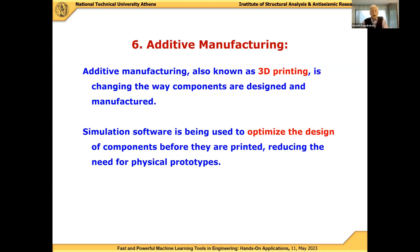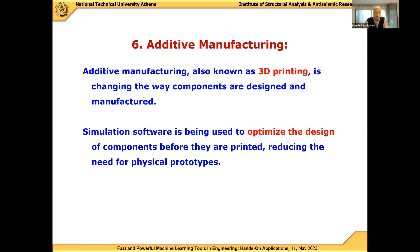Additive manufacturing, also known as 3D printing, is changing the way components are designed and manufactured. Simulation software is being used to optimize the design of components before they are printed, reducing the need for physical prototypes and also reducing the time and cost of preparing these design products.